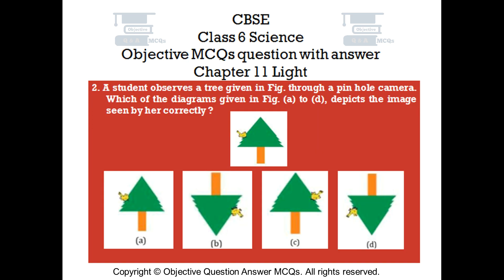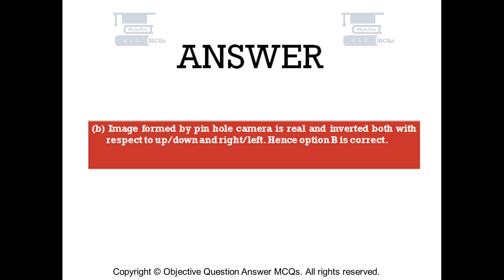Question number 2. A student observes a tree given in the figure through a pinhole camera. Which of the diagrams given in the figure, A to D, depicts the image seen by her correctly? The right answer is option B. The image formed by a pinhole camera is real and inverted, both with respect to up/down and right/left. Hence option B is correct.